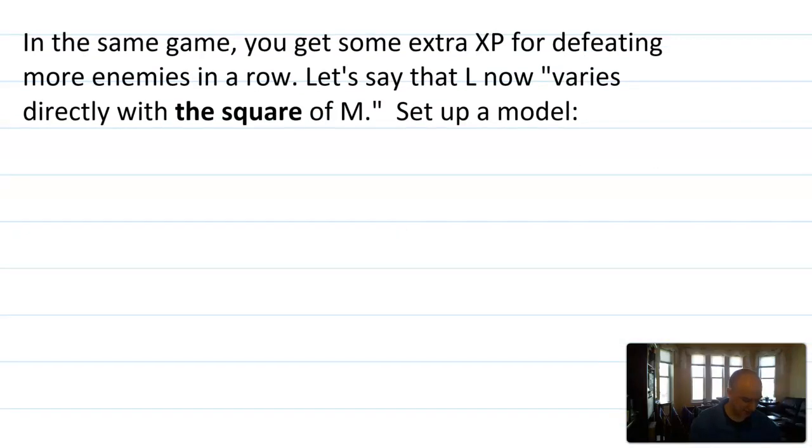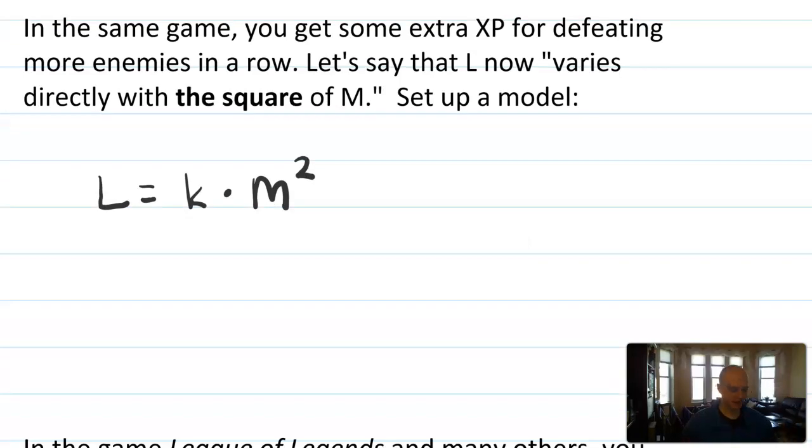Let's look at another one. Say that in the same game, the developer has changed it. They've patched it so that you now get extra experience for defeating more enemies in a row. Let's say now that the patch notes read that L varies directly with the square of M. So here's the model that I would write. I would write L equals k times M squared. So that's something that shows up here in this direct and inverse proportionality: sometimes you have exponents on one or the other variable. And if they'd given us a specific number of monsters and levels, we could then take that same idea and solve for k.